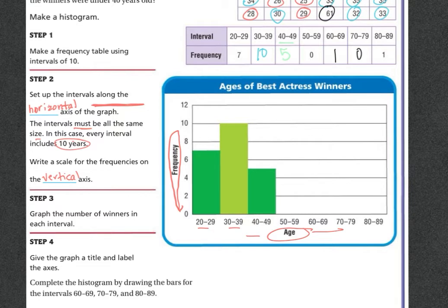Step 3 is to graph the number of winners in each interval. So they've already graphed the 20 through 29, the 30 through 39, the 40 through 49. So 50 through 59, there was none. So we're going to leave that blank. 60 through 69, there was only 1. So we're going to go halfway in between the 0 and the 2. 70 through 79, there were none. 80 through 89, again, there was 1. So we're going to go halfway in between the 0 and the 2.